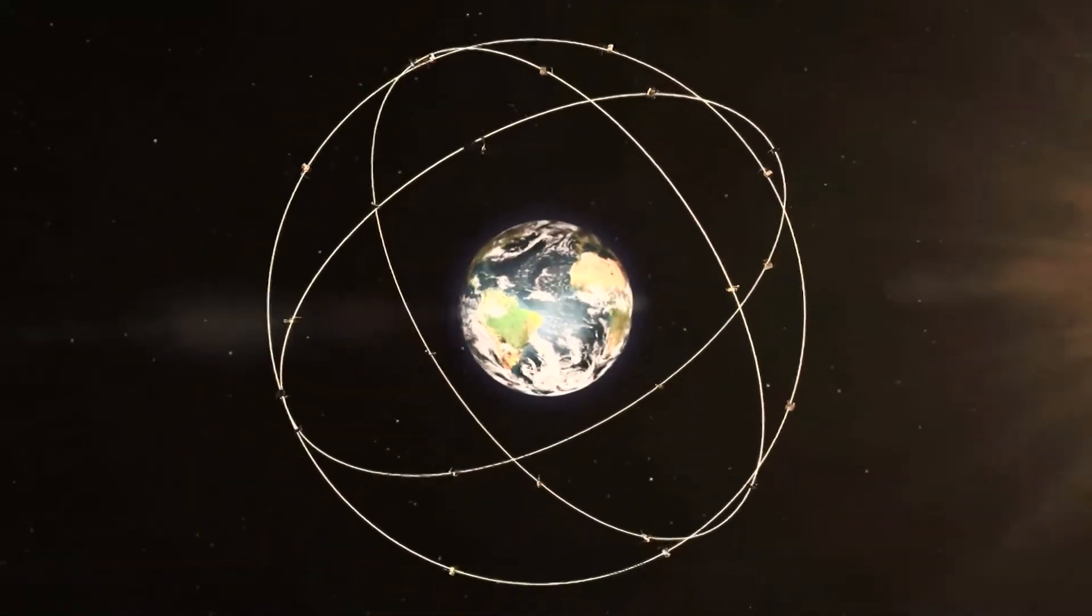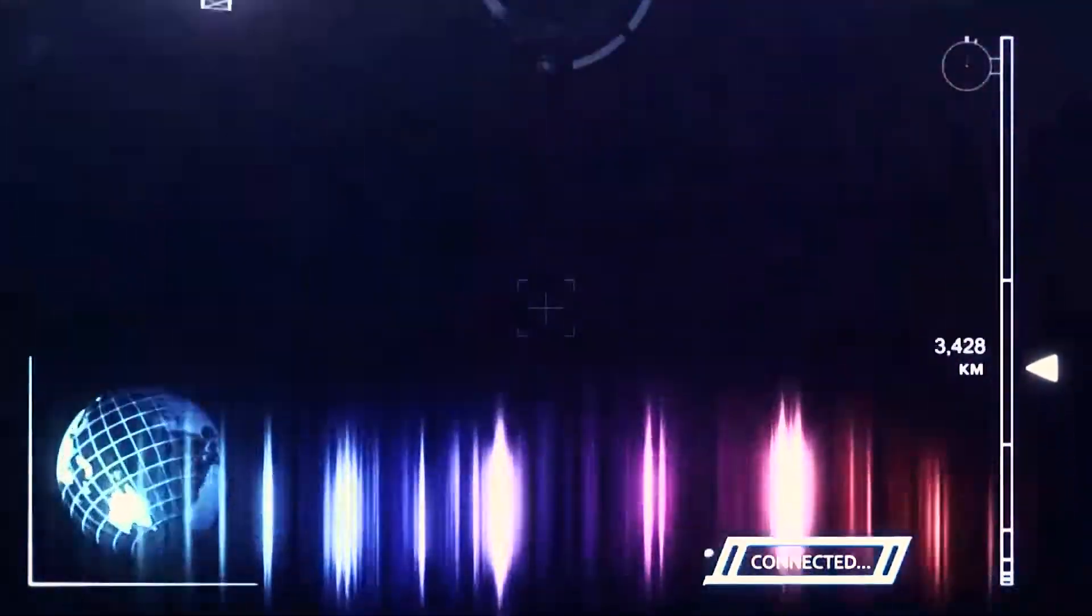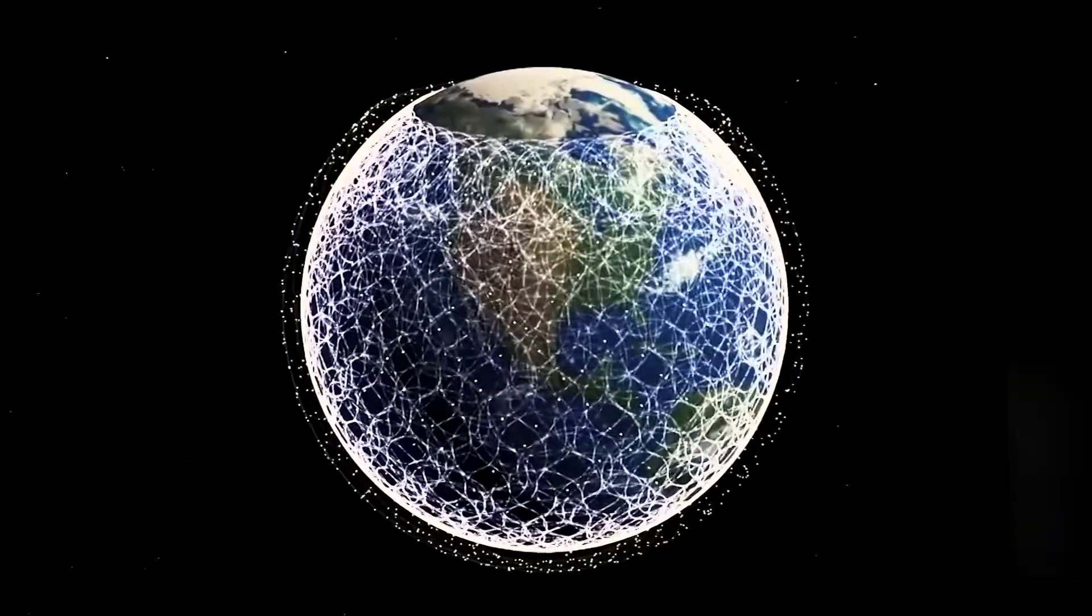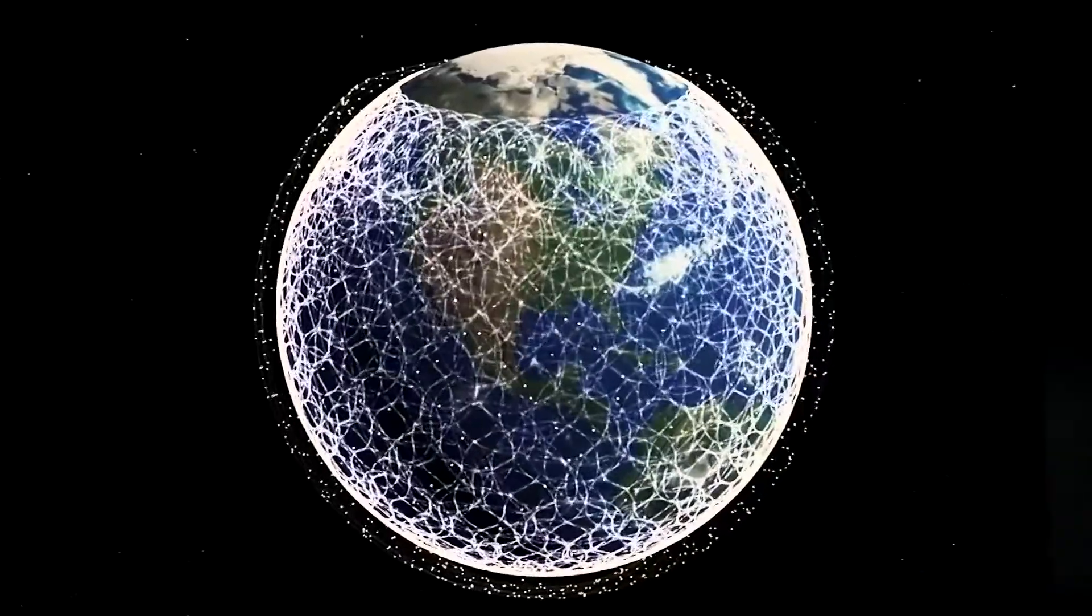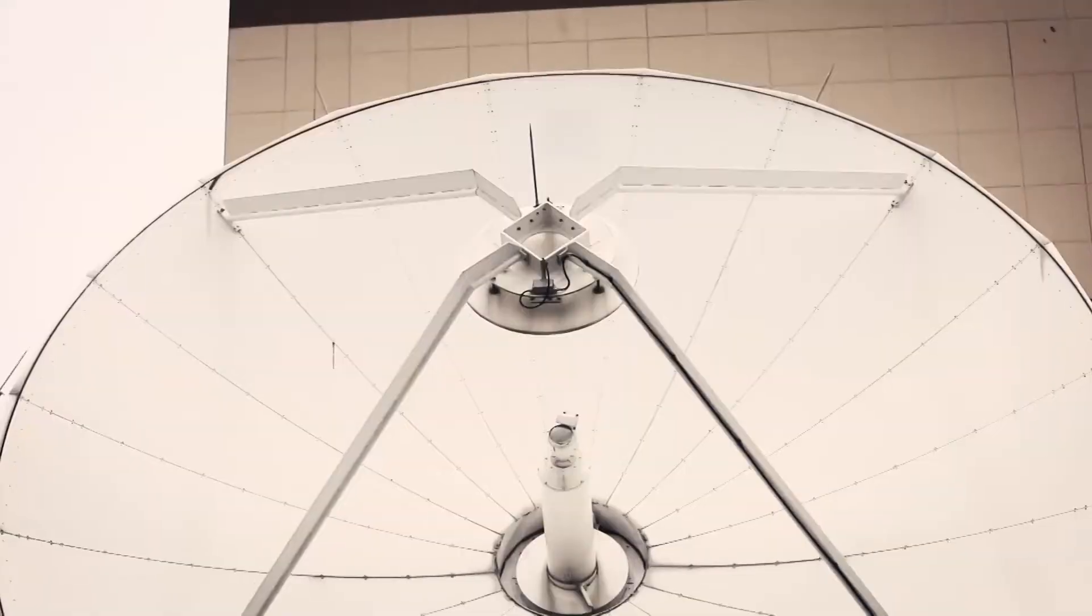Medium orbits, at altitudes close to 20,000 km, are usually designated to constellations of navigation satellites, while low Earth orbits are home to imaging and climate research satellites, as well as those providing communication.